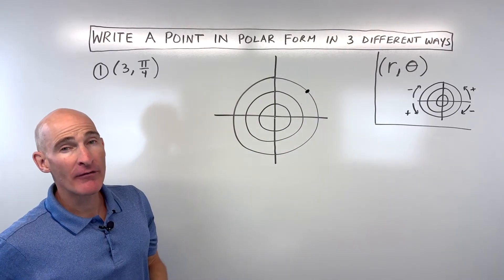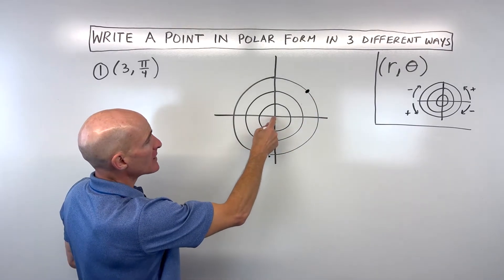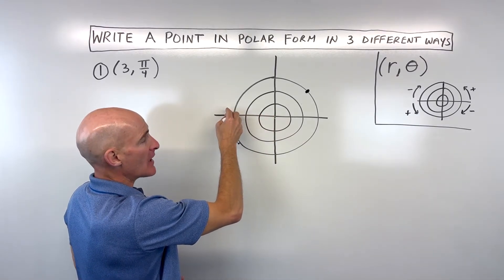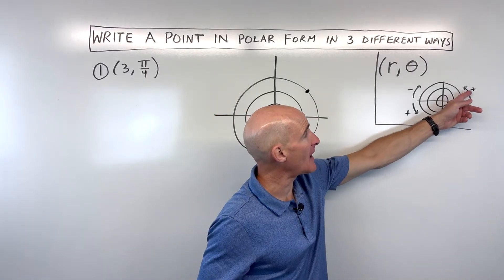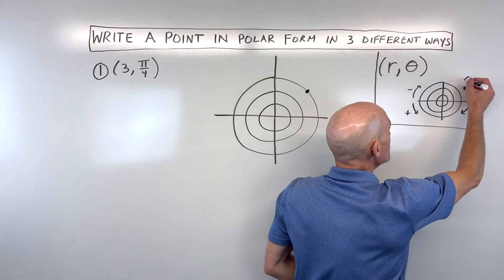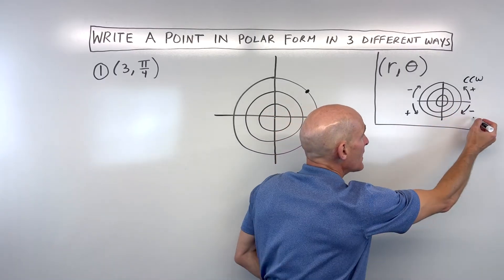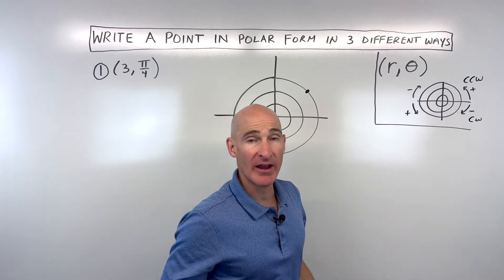If the r value is negative, I like to go to the left three and then rotate from there. Keep in mind that if you're going counterclockwise, it's a positive angle. If you're going clockwise, it's a negative angle.